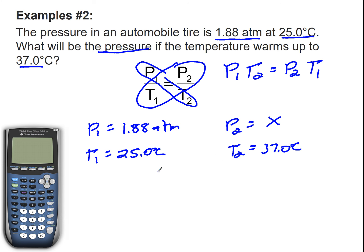I cannot have my temperatures in Celsius. I've got to convert it to Kelvin. So 25 plus 273 is going to be 298, and 37 plus 273 is going to be 310. So 25 degrees Celsius is 298 Kelvin, and 37 will be 310 Kelvin.